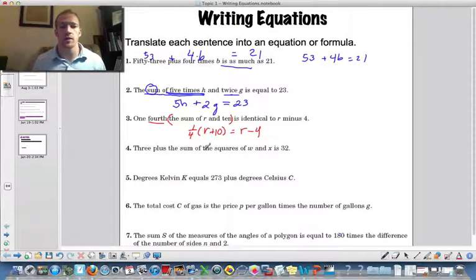3 plus the sum of the squares of w and x is 32. So we've got equals 32 there. So 3 plus the sum of the squares, so that's w square would be the square of w.